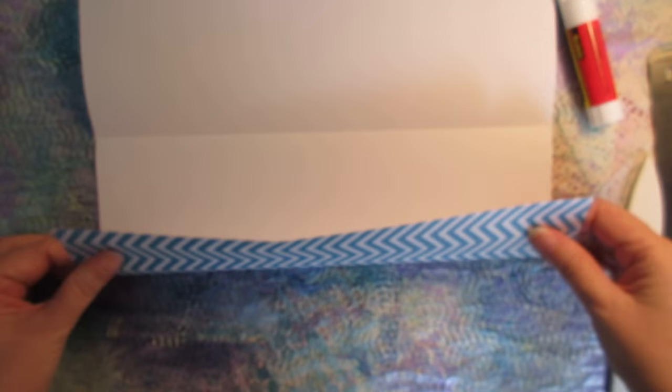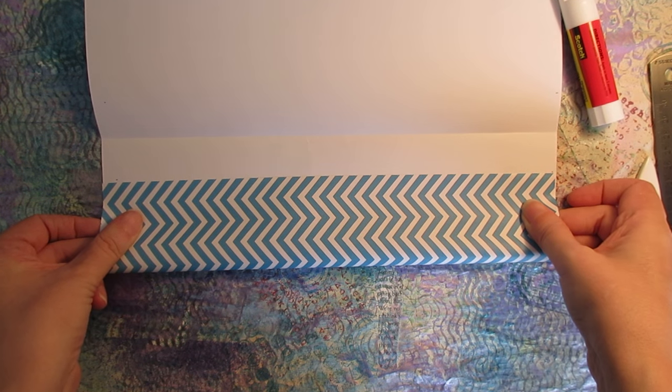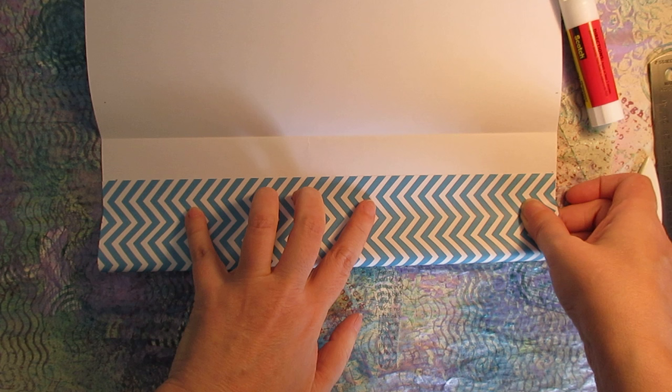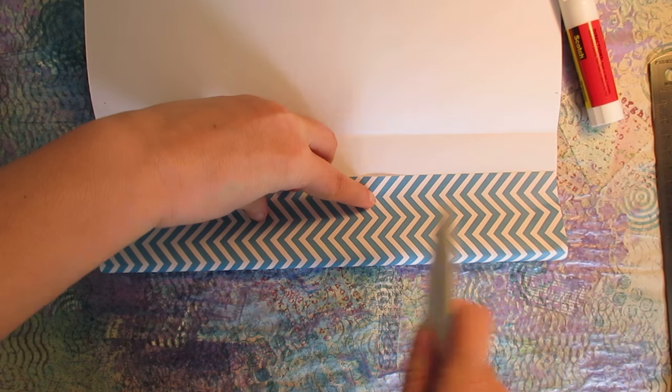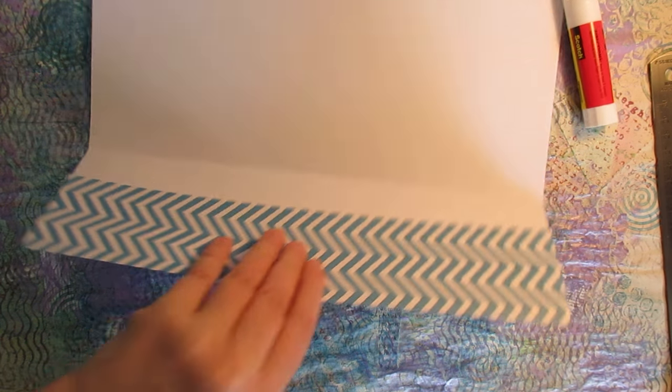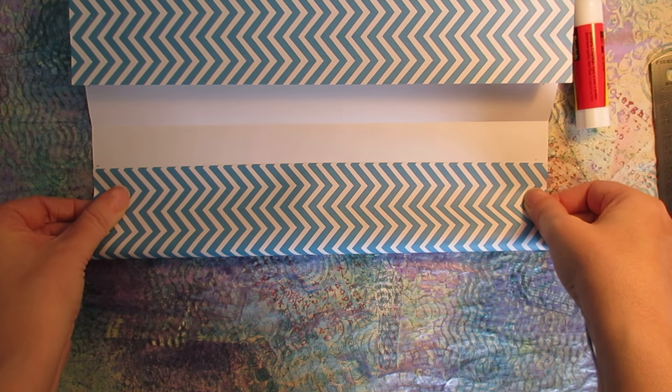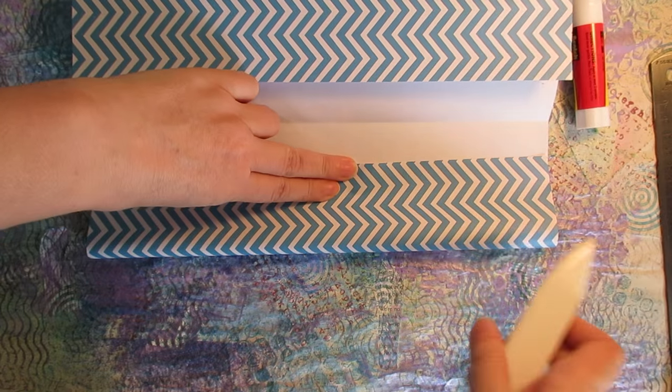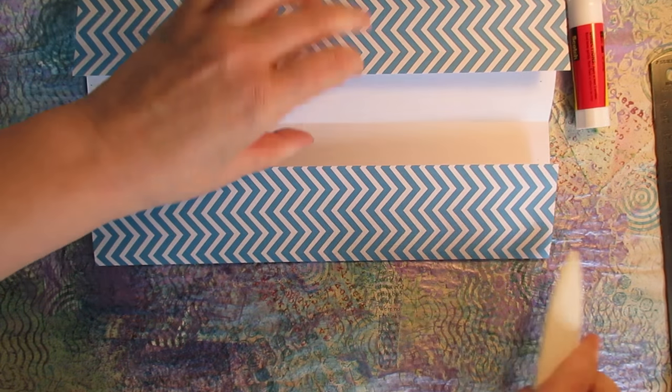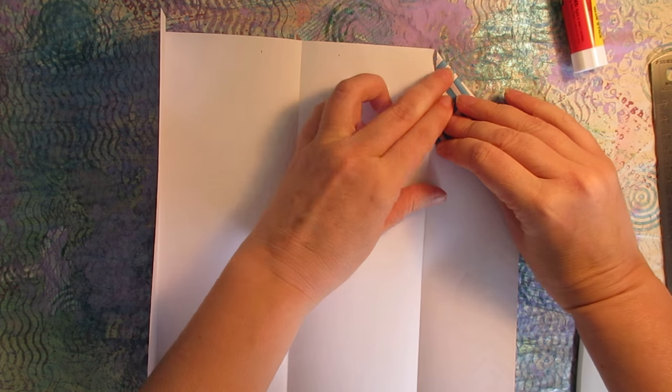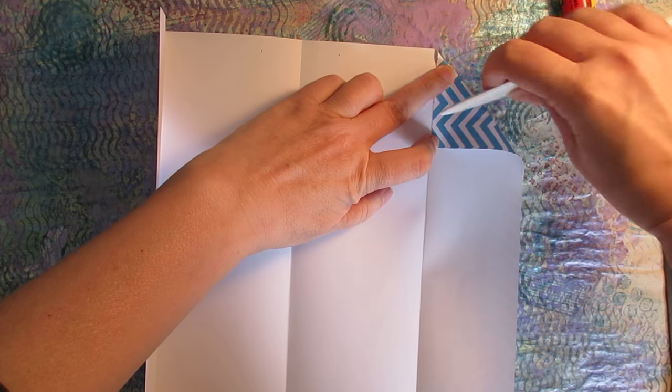Then all you need to do is fold in the side, the edge to the mark that you just made, and then use your bone folder. Open that up, and fold down the corners to the last fold you just made.